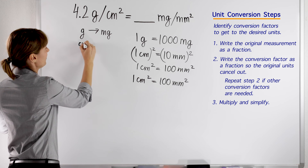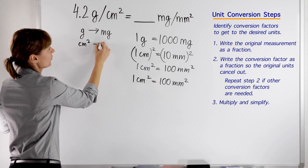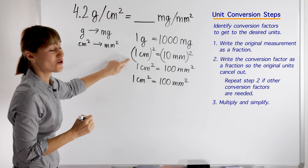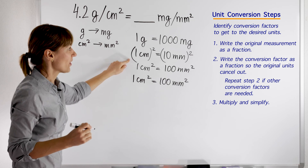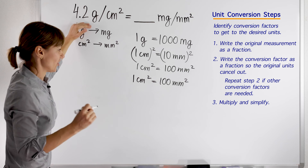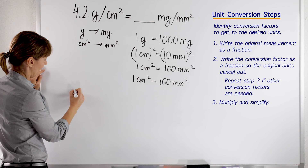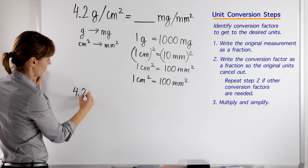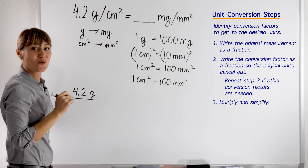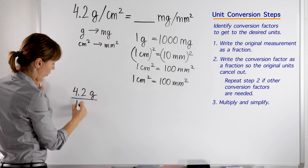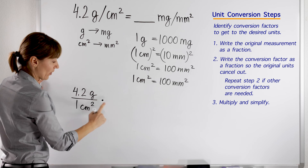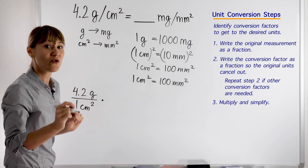We are going to change centimeters squared to millimeters squared, so we have two conversion factors. The first step tells us to write the original measurement as a fraction. So we are going to write 4.2 grams over 1 centimeter squared, then we are ready to multiply by a conversion factor.